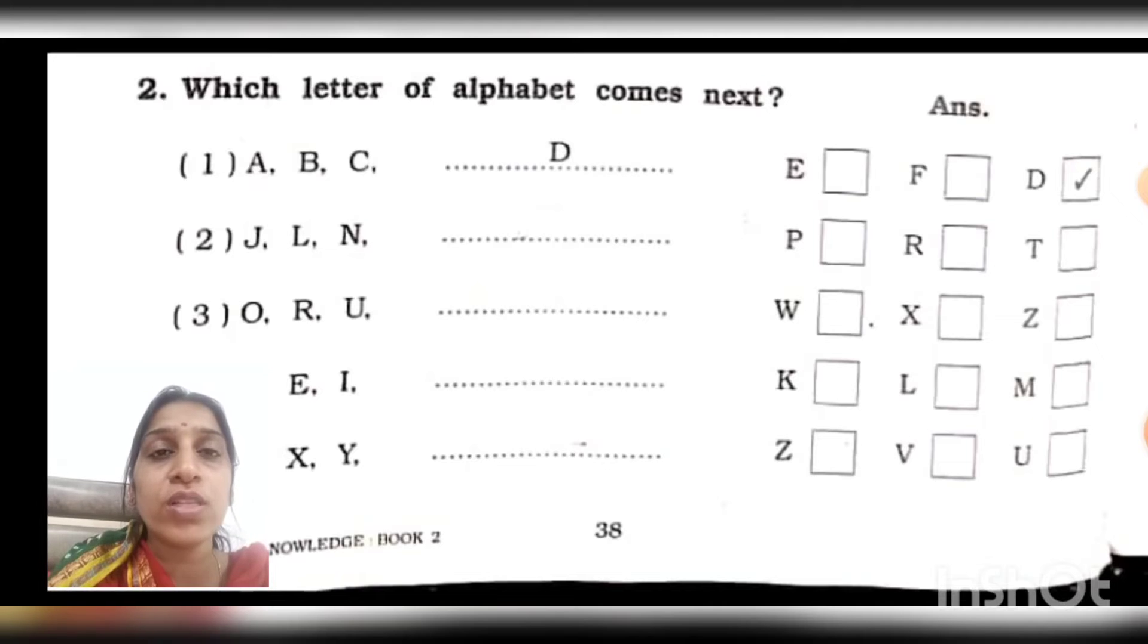Now we will focus on number 2. J, L, N. Can you guess which letter is coming after J? K. But we have skipped K and moved to L. We skipped M and moved to N. So after N, we will not take O. We will go with P.